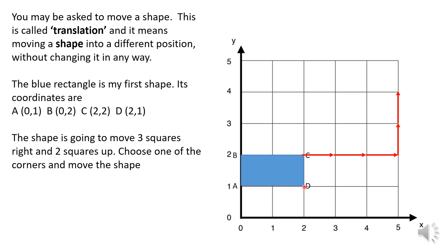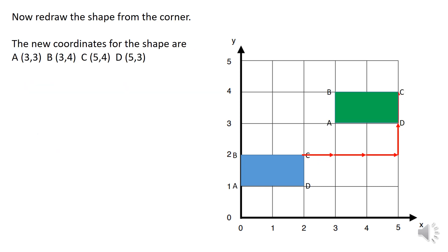This shape is going to be moved three squares to the right and two squares up. I'd always recommend starting from one of the corners — I'll start at C — and move it three squares over and two squares up. Redrawing the shape from this new corner, the new coordinates are: A at (3, 3), B at (3, 4), C at (5, 4), and D at (5, 3).